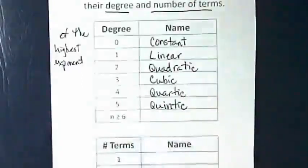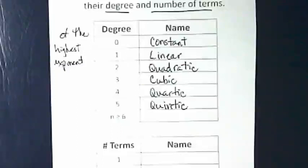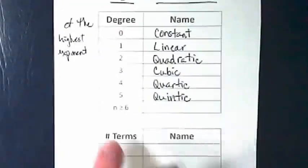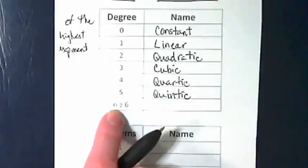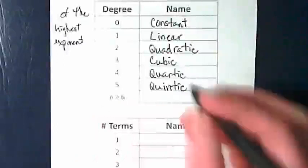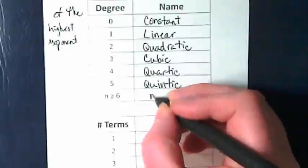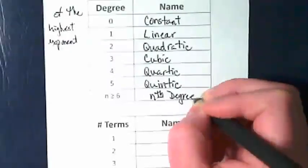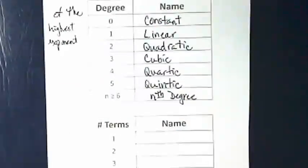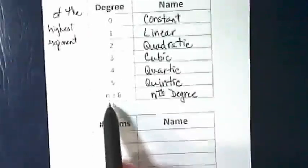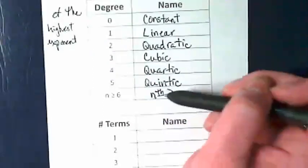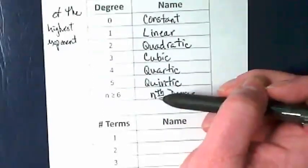Do you think some of these came from the same roots as some words for numbers in languages? And then anything with the degree of six or over, we call it to the nth degree. Meaning if it was an eight, we would say it's to the eighth degree. If it was a nine, it would be to the ninth degree. So these ones have special names, but once they go six or over, we just call it what the degree is with the number itself.